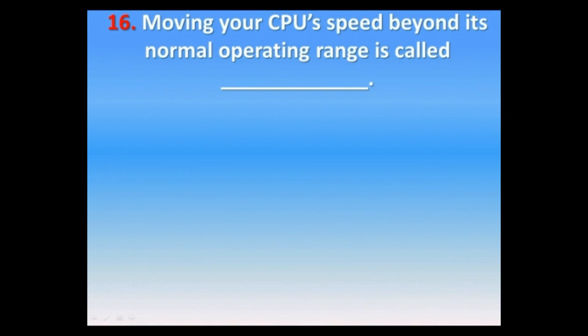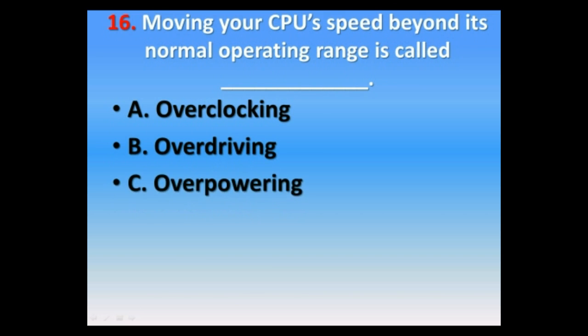Question number sixteen. Moving your CPU speed beyond its normal operating range is called what? A. Overclocking, B. Overdriving, C. Overpowering, D. Overspeeding. The correct answer is A. Overclocking.